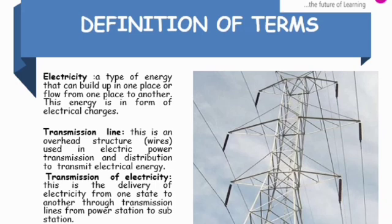What is a transmission line? A transmission line is an overhead structure in form of wires using electric power transmission and distribution to transmit electrical energy.